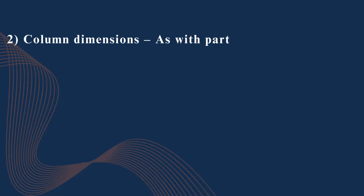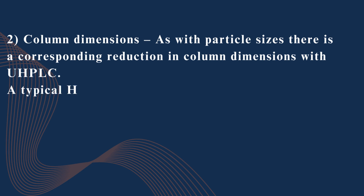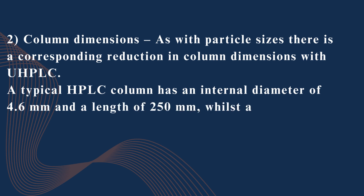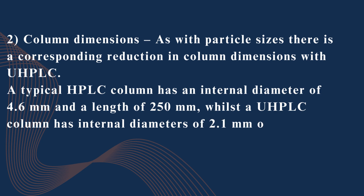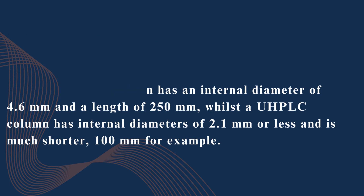Column dimensions. As with particle sizes, there is a corresponding reduction in column dimensions with UHPLC. A typical HPLC column has an internal diameter of 4.6 mm and a length of 250 mm, whilst a UHPLC column has internal diameters of 2.1 mm or less and is much shorter, 100 mm, for example.